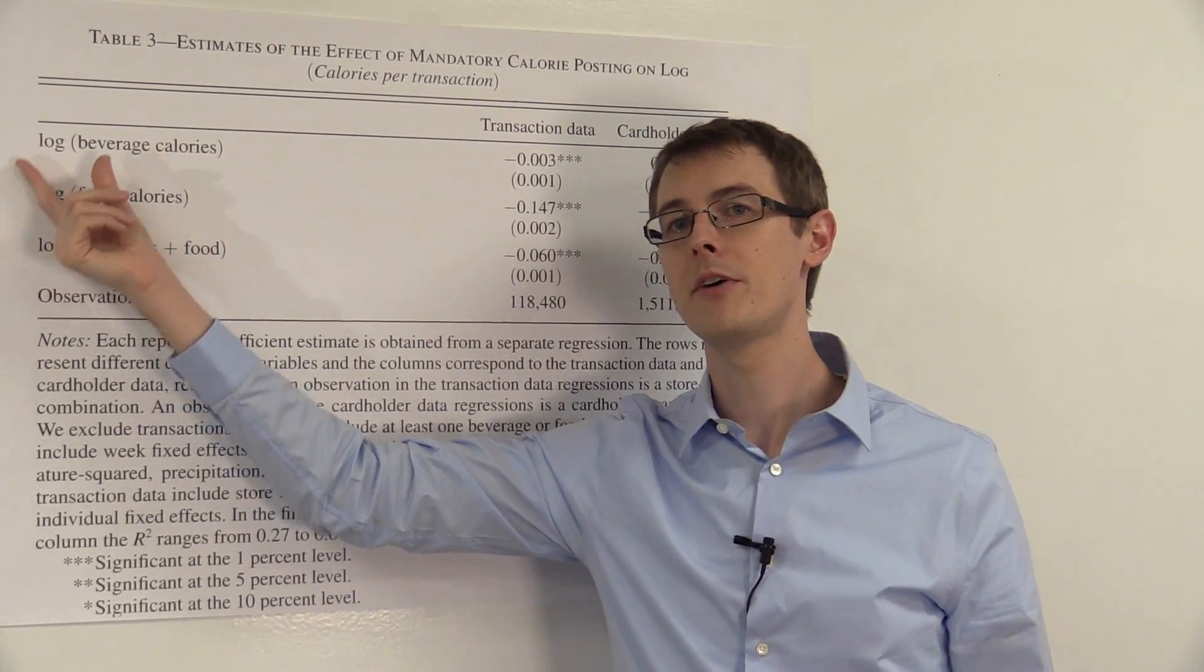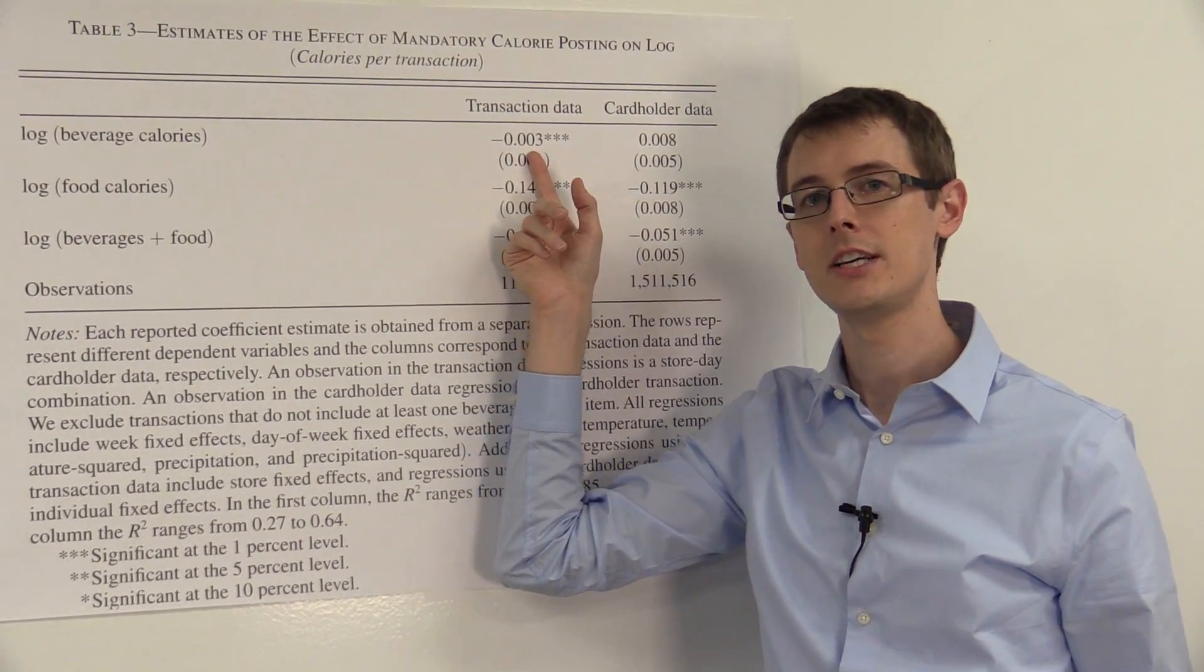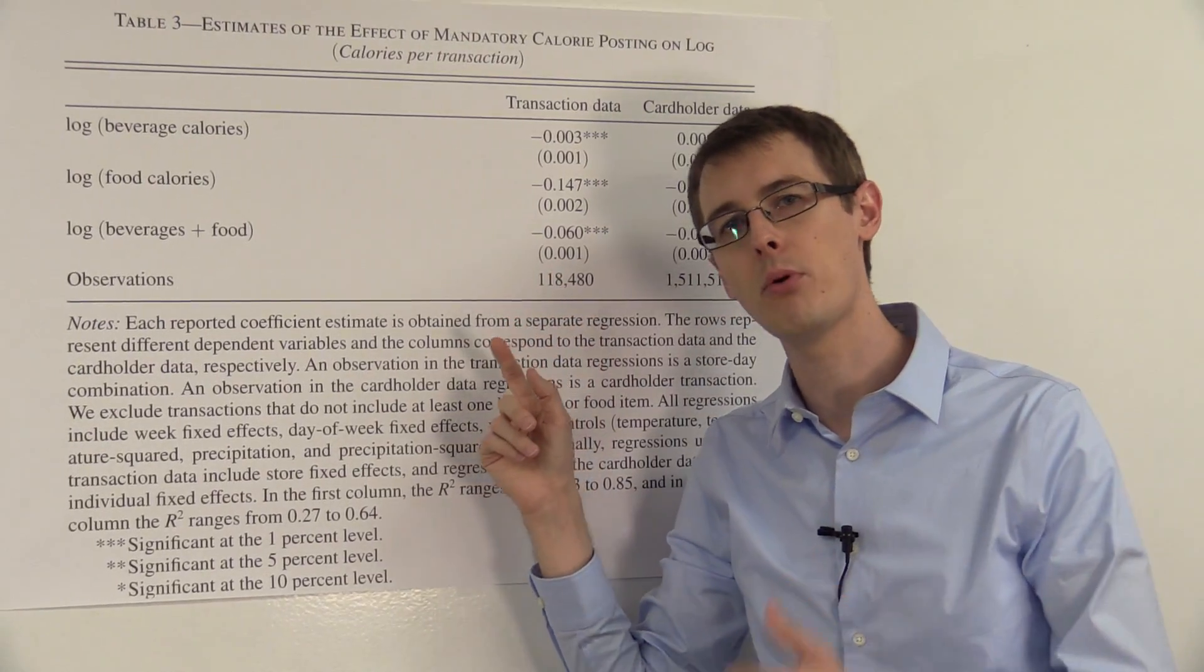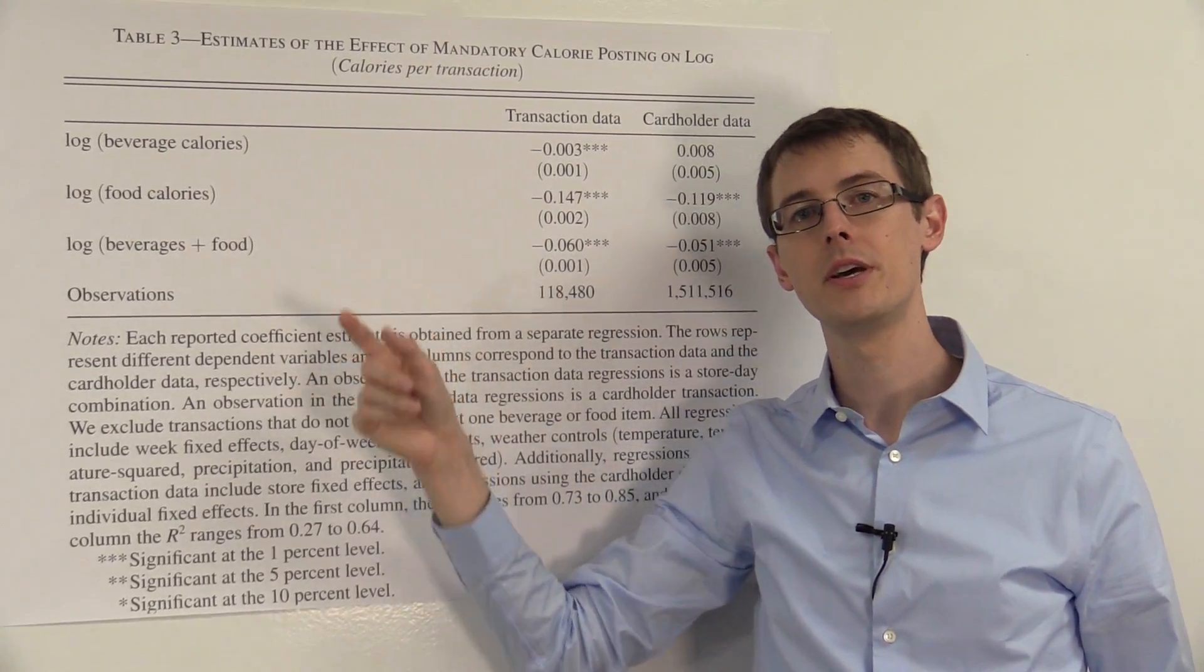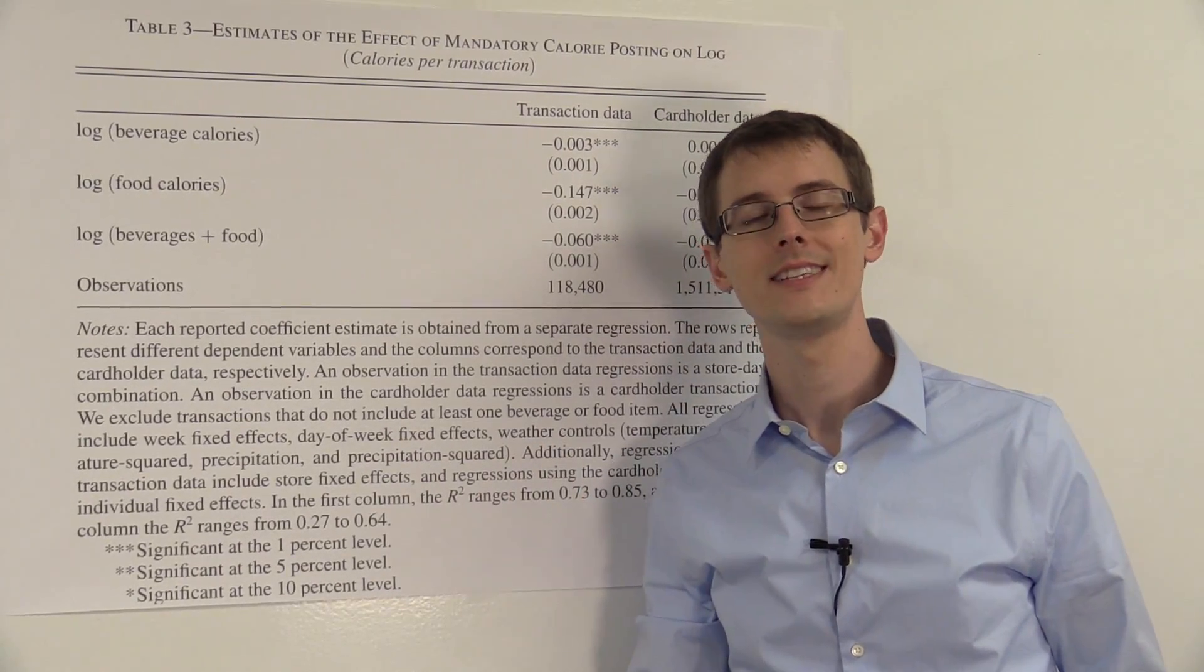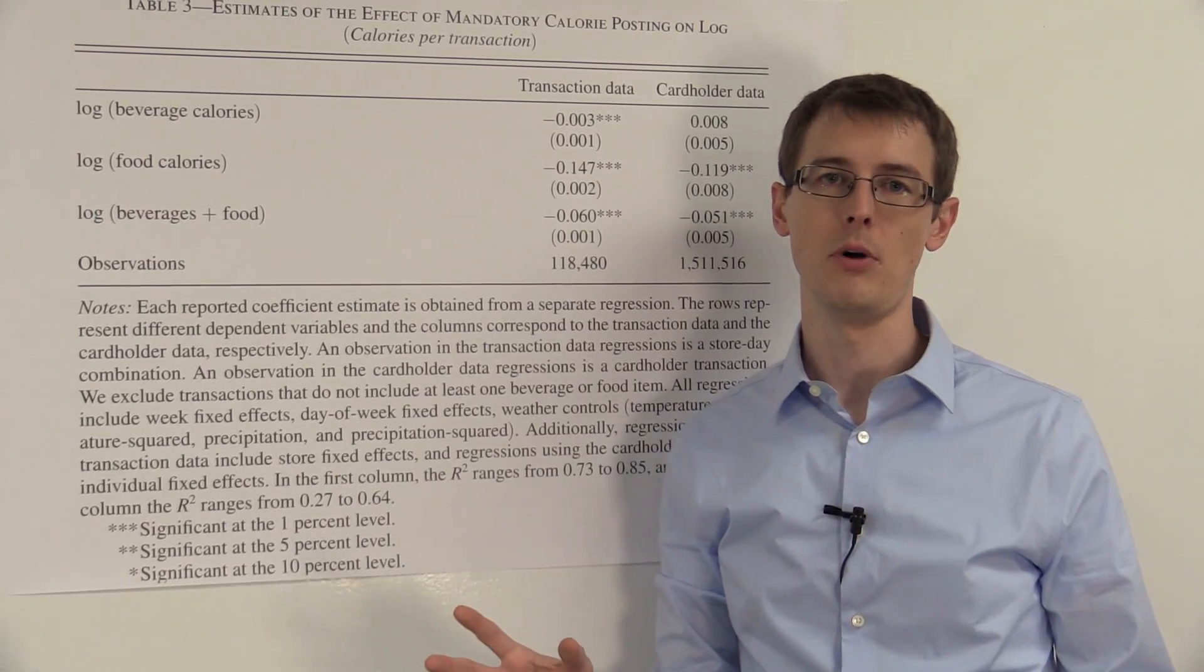Now because the outcome variable is a log, this can be interpreted as a percentage. So it's actually minus 0.3 percentage points decrease in beverage calories consumed because of the law. That's our causal effect on beverage calorie consumption. So that seems pretty small.